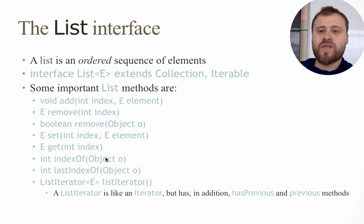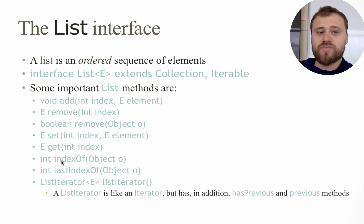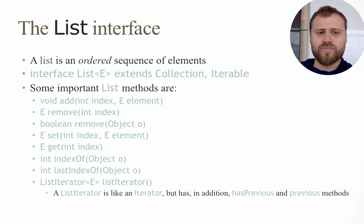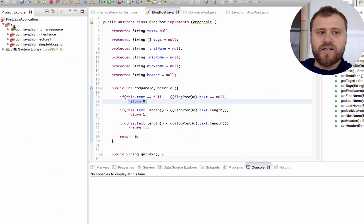For indexOf(), you need to override the equals() method of the object, because this method tries to invoke equals() on all instances inside the list, and if equals() returns true, that means the current item is the one we are searching for, returning its index. lastIndexOf() returns the last occurrence of the item. You may also iterate over the list using the ListIterator or Iterator interfaces.